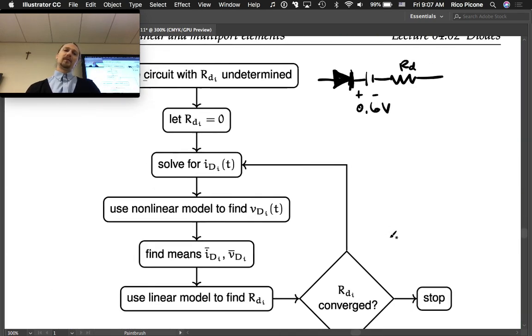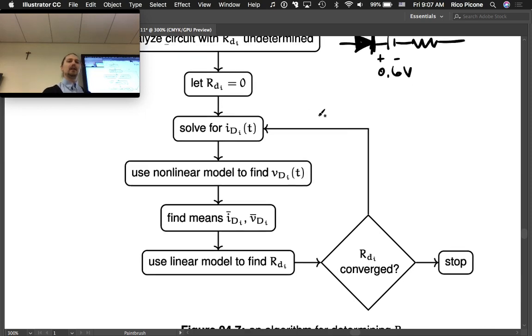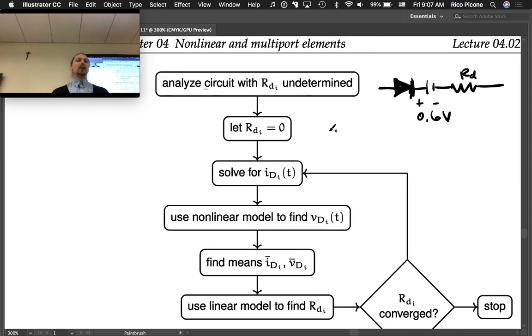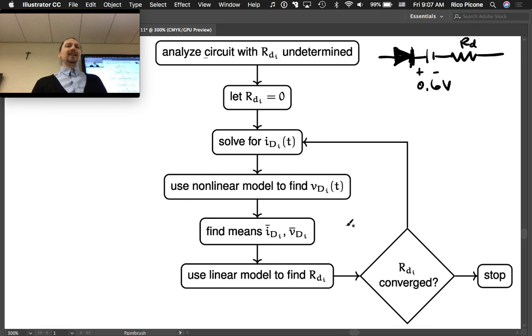Back down to our algorithm. Solve for ID, for the current through each diode, and then you have this nonlinear relationship that you're trying to approximate. If we use that nonlinear relationship to find VD, the corresponding voltage that would be across the diode, then we're going to have the current and the voltage. The current came from assuming it was this idealized piecewise linear model. The voltage came from then turning around assuming it was the nonlinear model, which is a bootstrapping method that we have here.